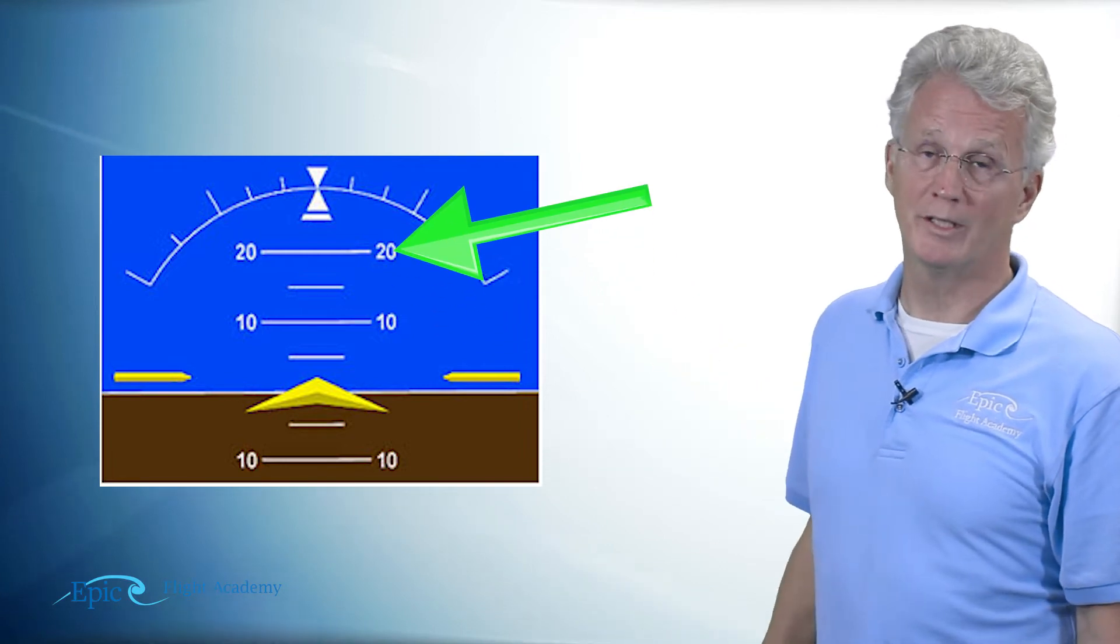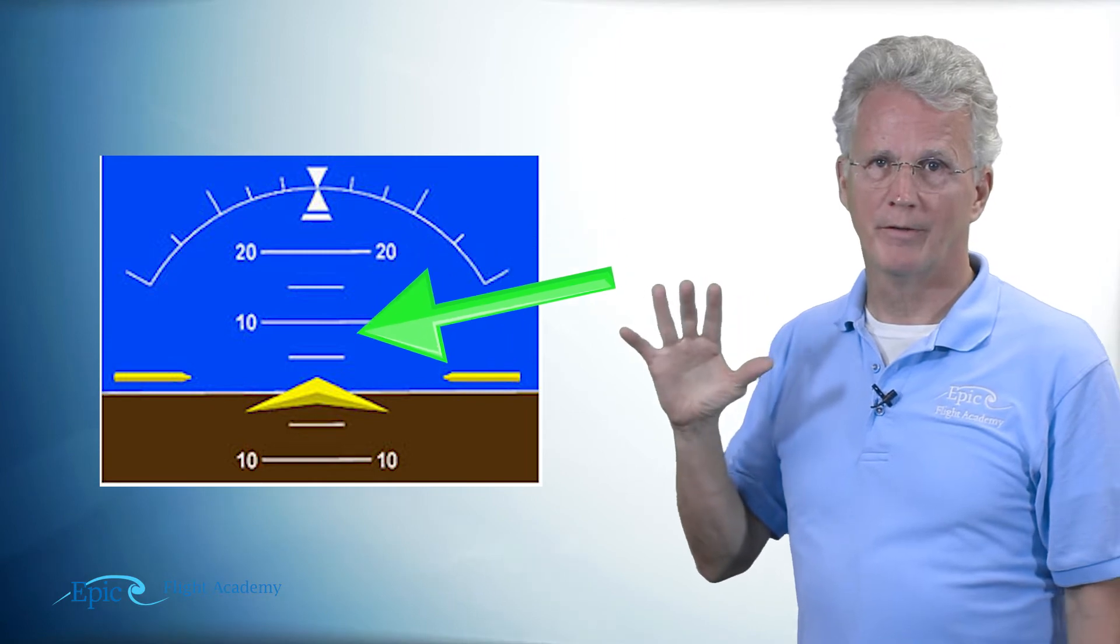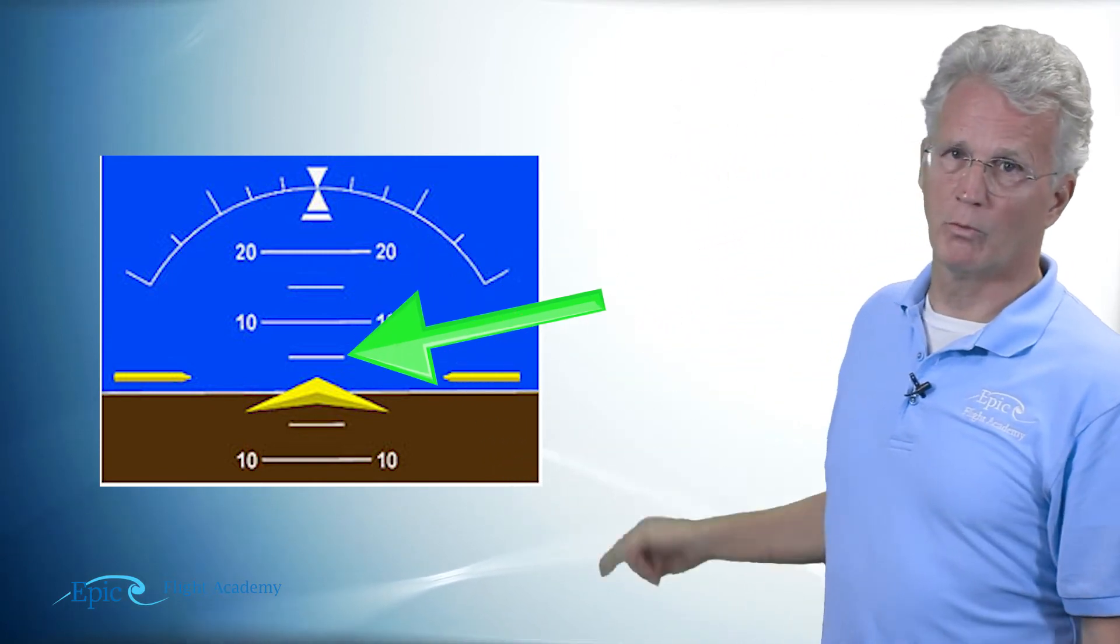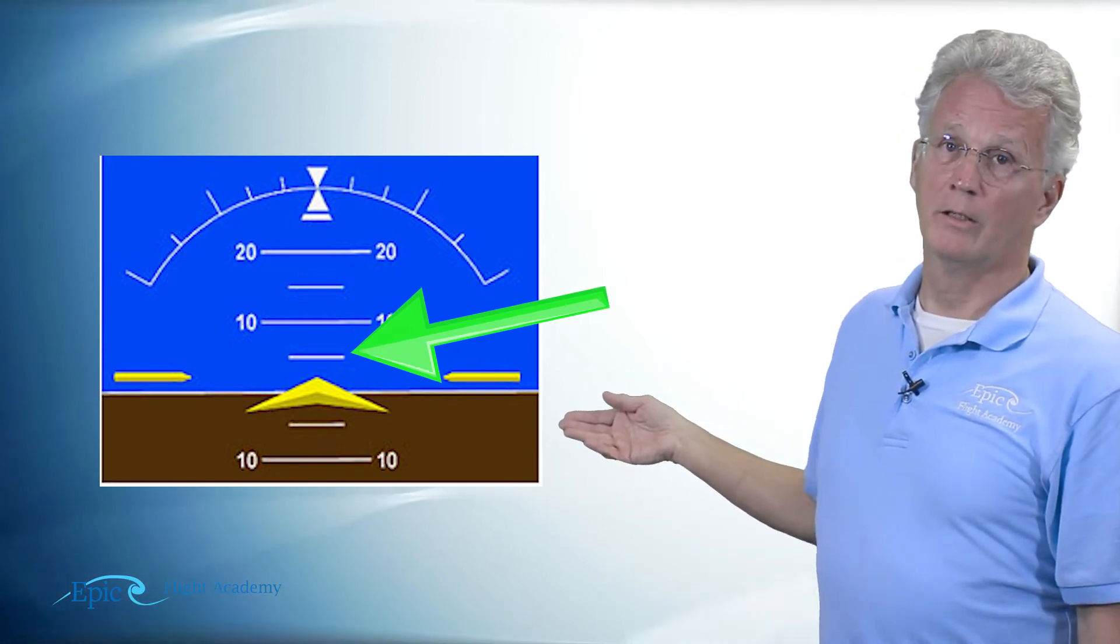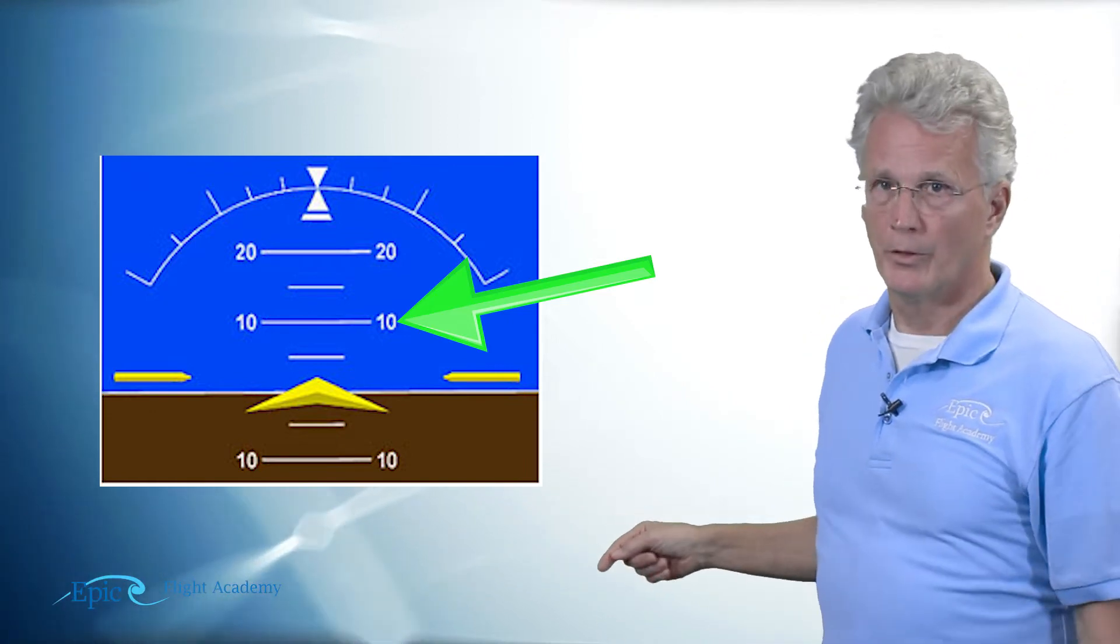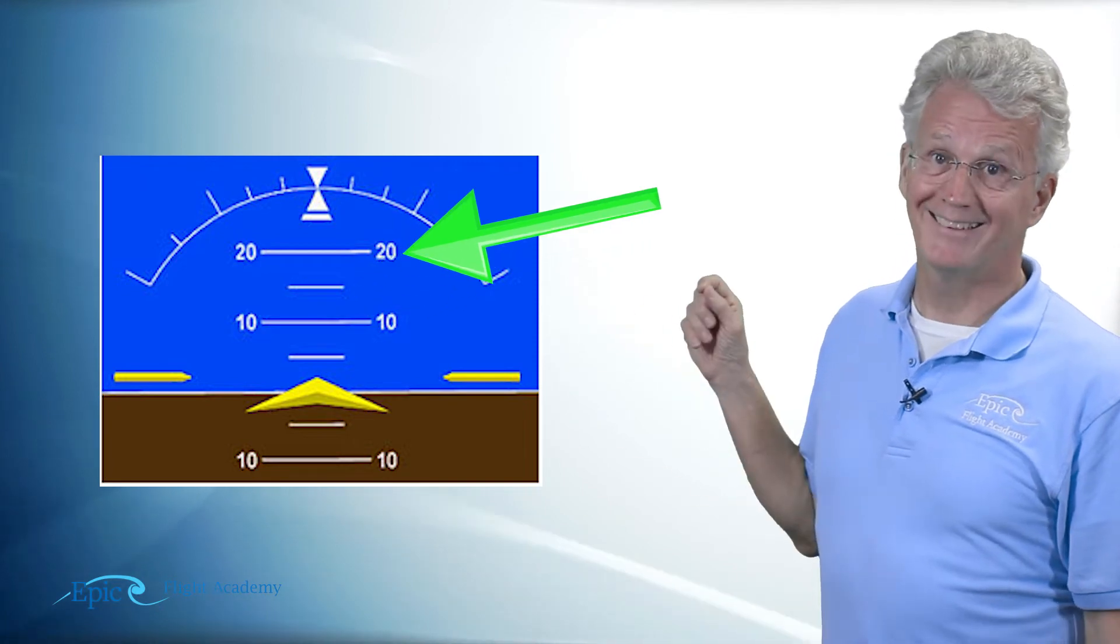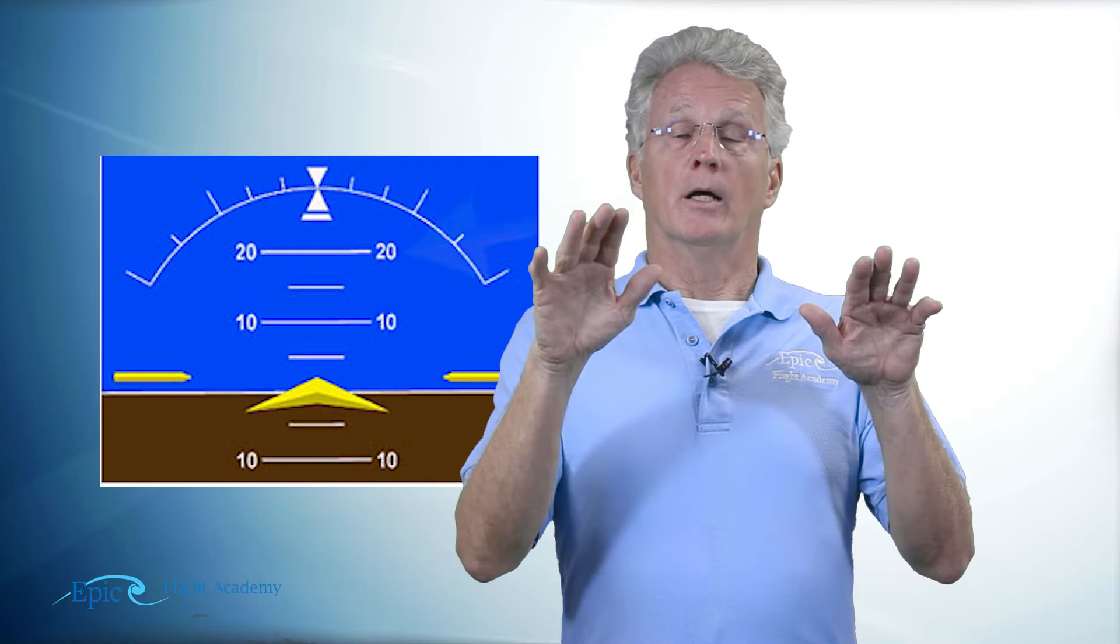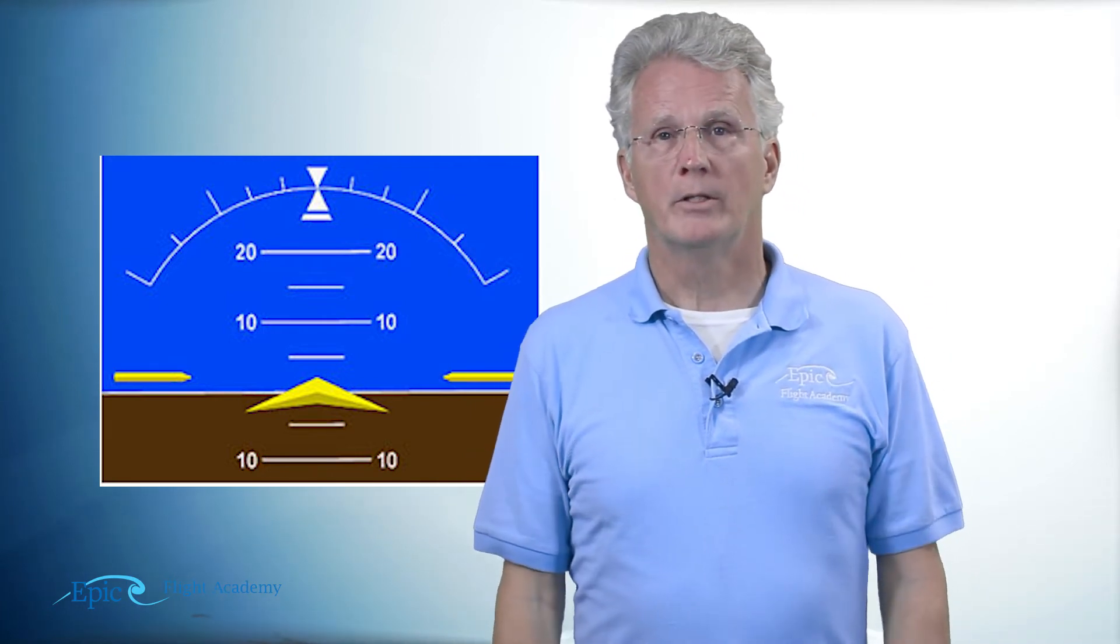So the first little white line is five degrees, the second white line, a larger line, is labeled 10. The third one is 15, and the fourth one is labeled 20. That's pitch, that's aircraft nose up, nose down.